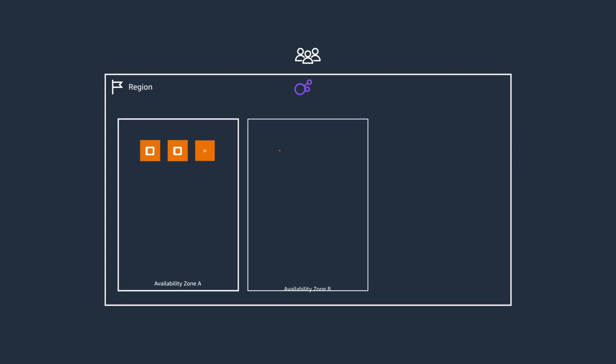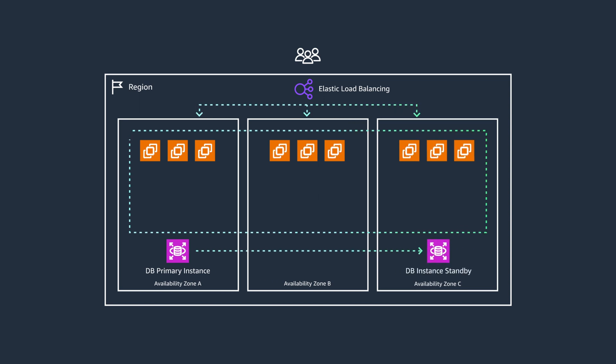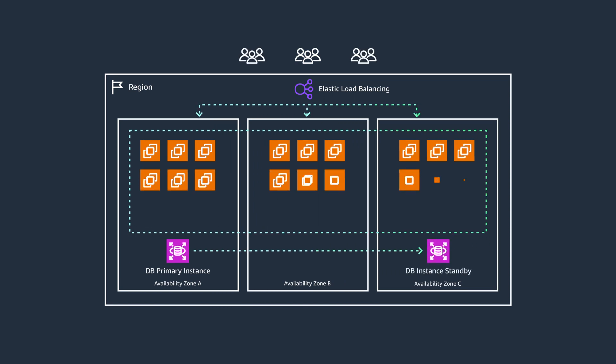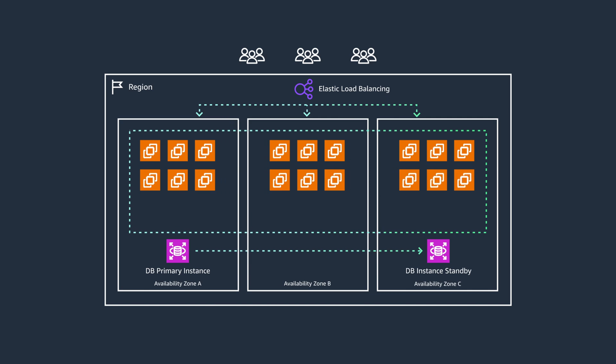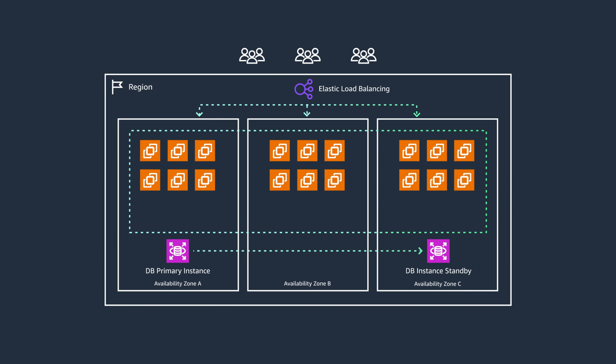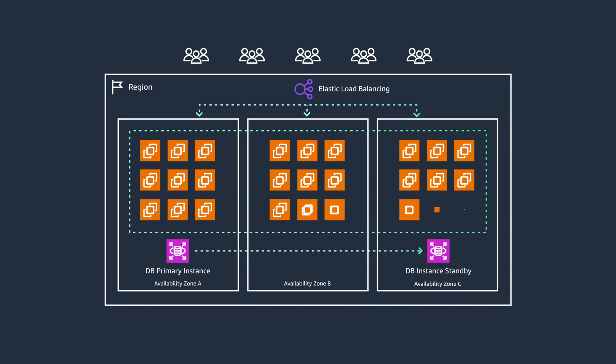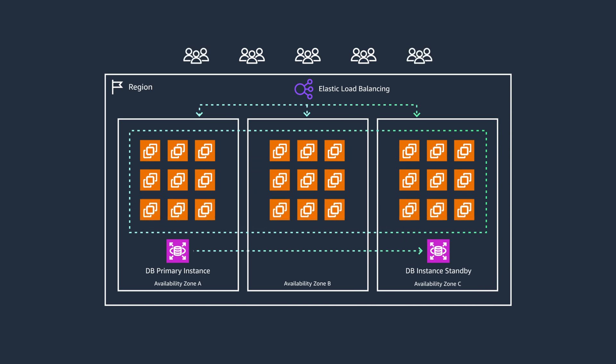A few years back I worked on an API using a typical ELB over an auto-scaling set of instances connected to a replicated database. Over time the application's popularity grew, increasing total users and traffic. As additional features were added, the system grew in complexity — what started as a small-scale application grew bigger and bigger.